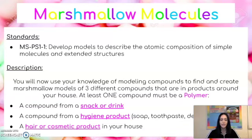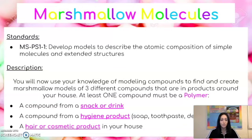Next you will find a hygiene product. This could be soap, toothpaste, deodorant, anything along those lines, and you will find from the ingredients label one compound from that. Finally you will find a hair product or a cosmetic product and find another compound to model from that product.